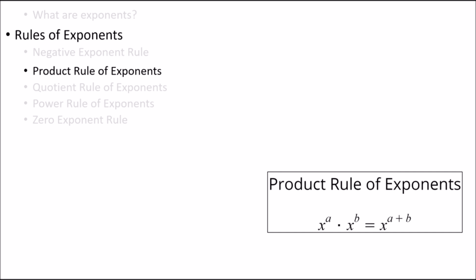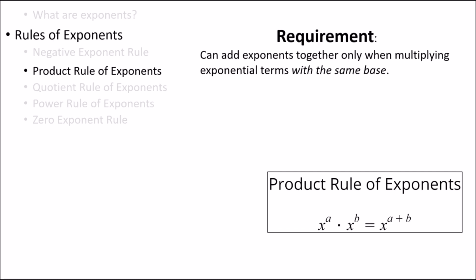The next rule of exponents is called the product rule of exponents. As the word product implies, it'll help us simplify exponential terms that are multiplied together. The product rule of exponents can only be used when multiplying exponential terms with the same base. For example, we can use the product rule of exponents to simplify 2 to the 3 multiplied by 2 to the 5. Here we would just add together the exponents to give us 2 to the 8.